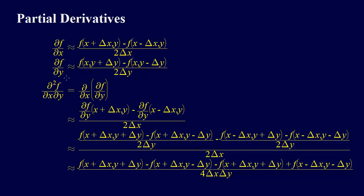The equation for the partial of f with respect to y is the same — x is just sort of hanging out there. And we do y plus delta y and y minus delta y, over 2 delta y. We just do all of that with the y's.